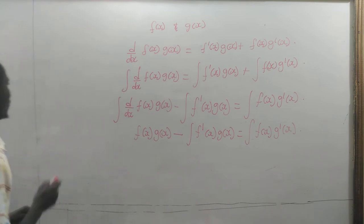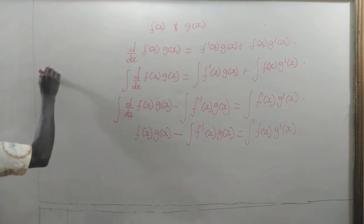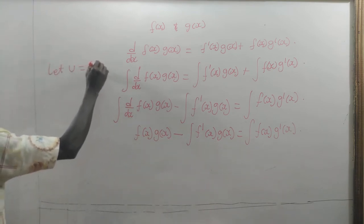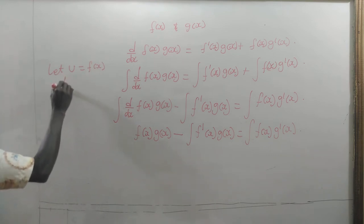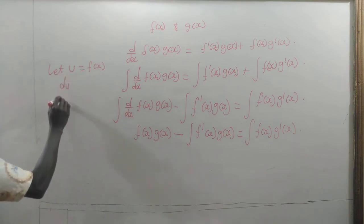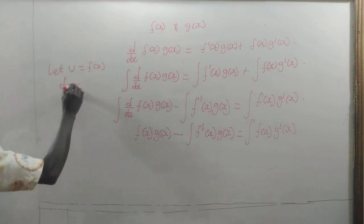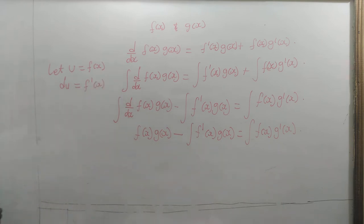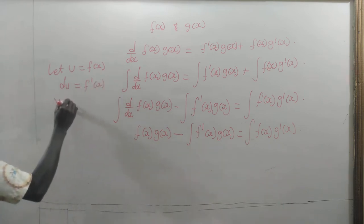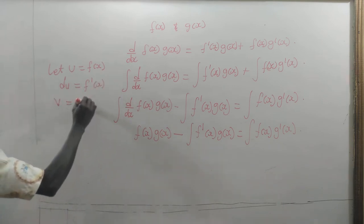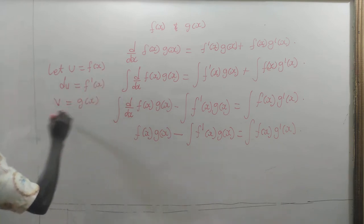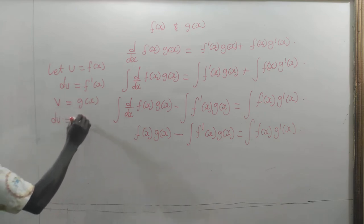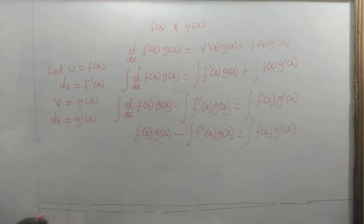Now, if we let u equal to f of x, then the derivative of u is equal to f prime of x. And if we let v equal to g of x, then the derivative of v is equal to g prime of x.